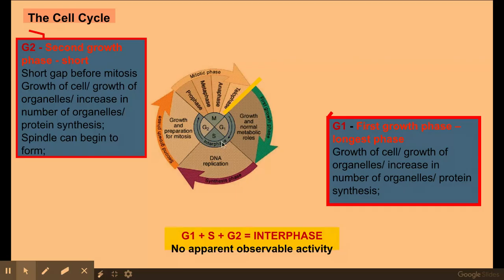In our G2 phase, I know I've skipped S for a second, just bear with me. But in the G2 phase here, very similar to the G1 phase, except for at the end here, we get spindle formation. So the spindle can start to form. And again, you'll learn more about the role of the spindle when we get on to mitosis, which is specification point C.